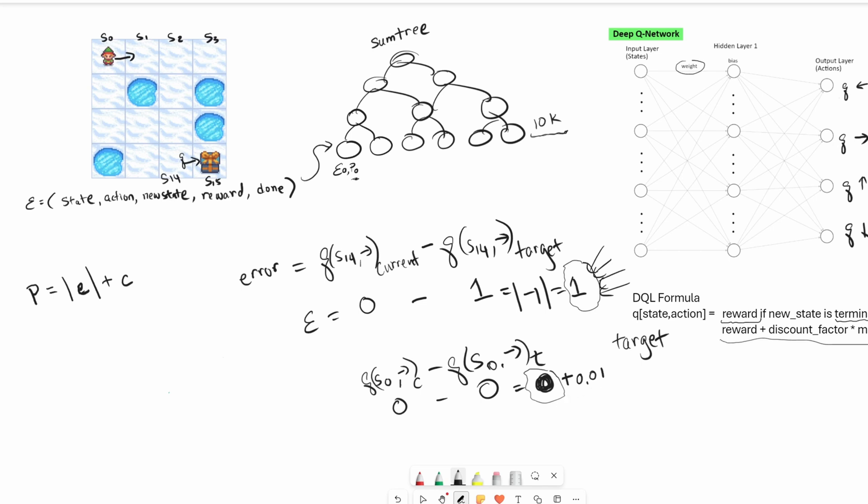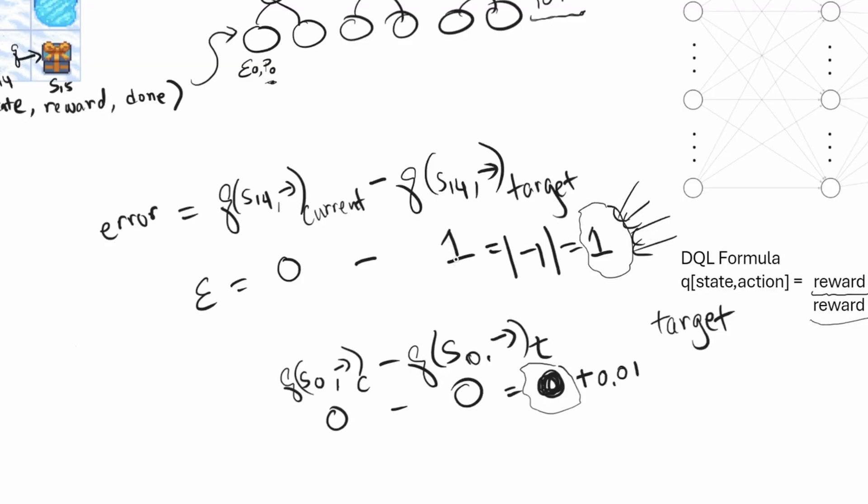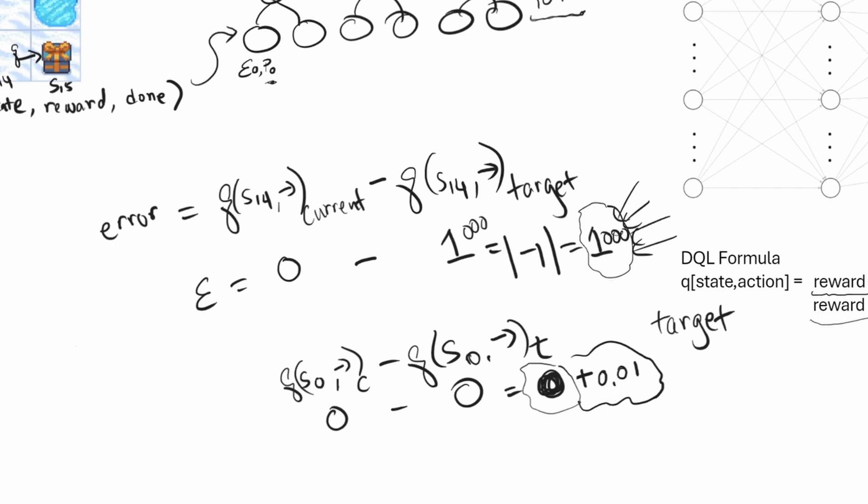Now there's one more problem. The reward here just happens to be one, but in other environments, the reward could be anything. It could be 1,000. And then the end result here gets 1,000 priority versus almost no priority. This is also no good. What we can do to compress the gap between something that has a high priority versus something that has a low priority is to add an exponent alpha here.